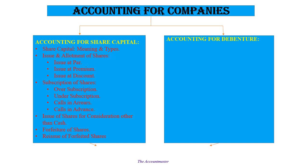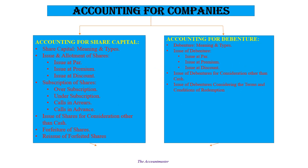In Accounting for Debentures we will study the meaning of debentures and types of debentures. After that, issue of debentures — how to issue debentures at par, at premium, and at discount, just like we issue shares. Similarly here also we issue at par, premium, and discount. Then issue of debentures for consideration other than cash, and also issue of debentures considering the terms and conditions of redemption.